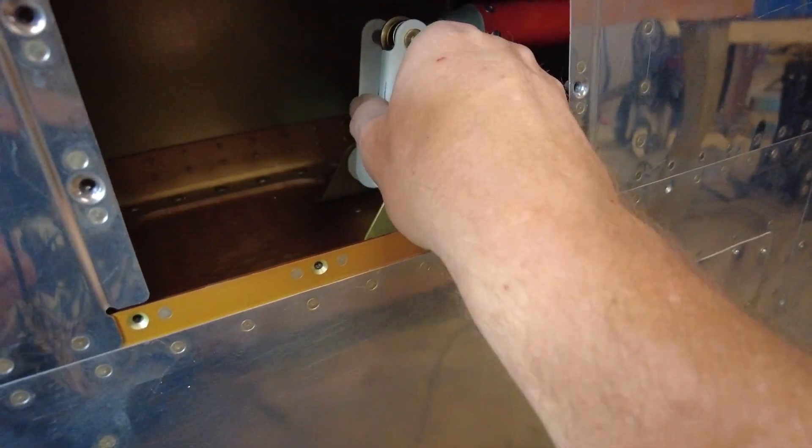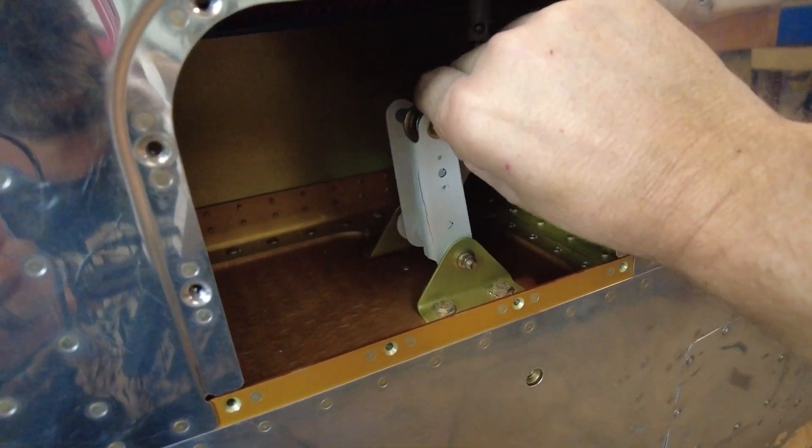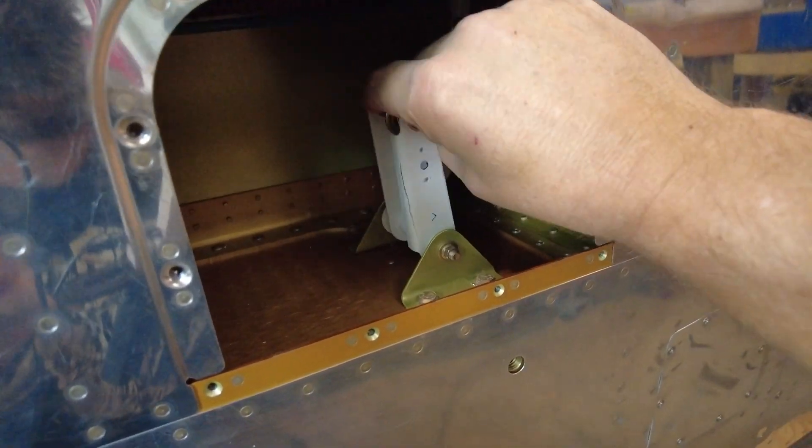We got the wing all closed up, then discovered a little problem. The bell crank, the aileron bell crank in there, when it's properly torqued per plans, it binds just enough. It's not nearly as free as the other side was, so we had to go into troubleshooting mode.